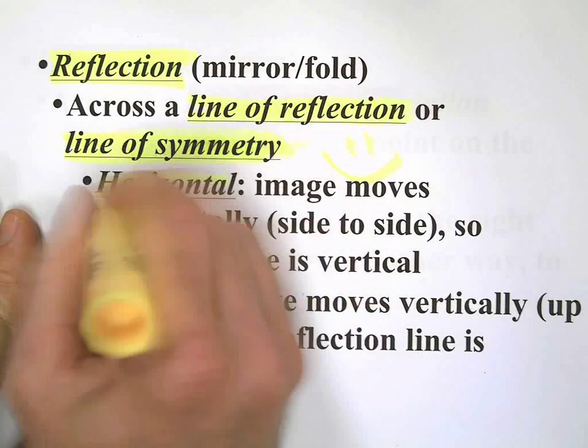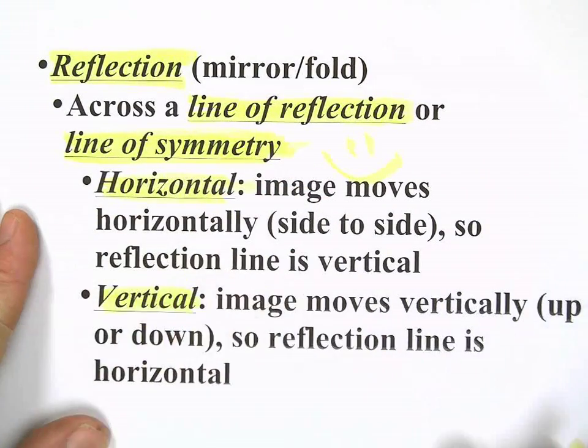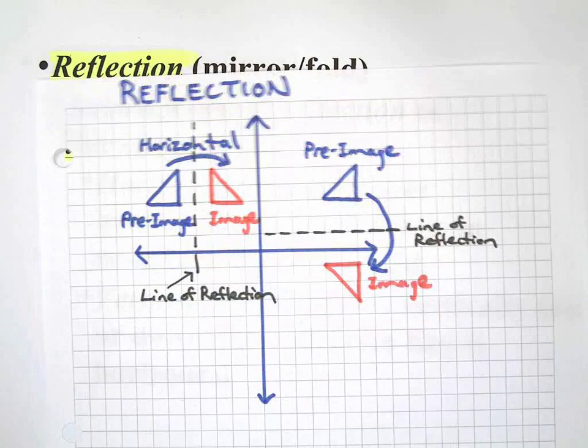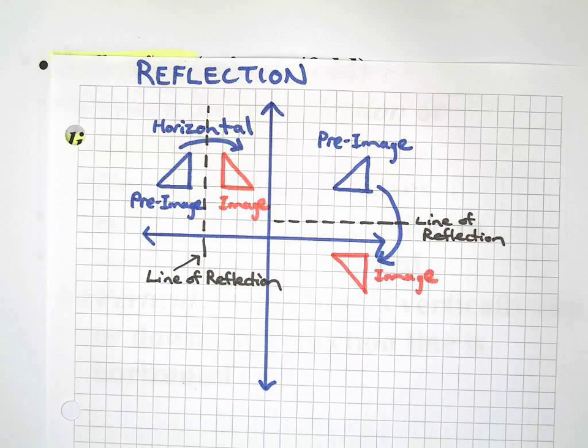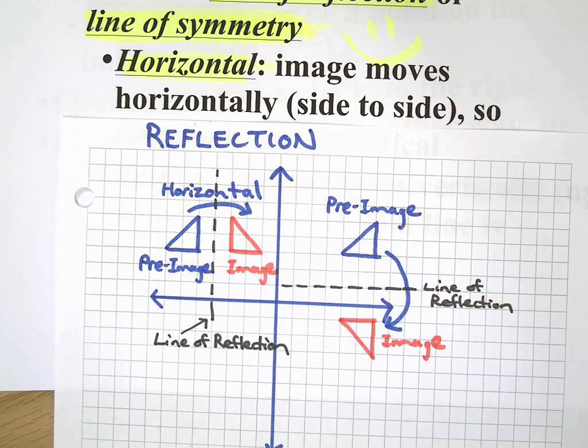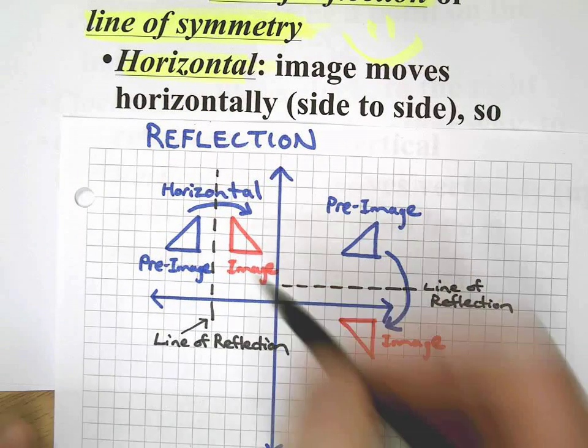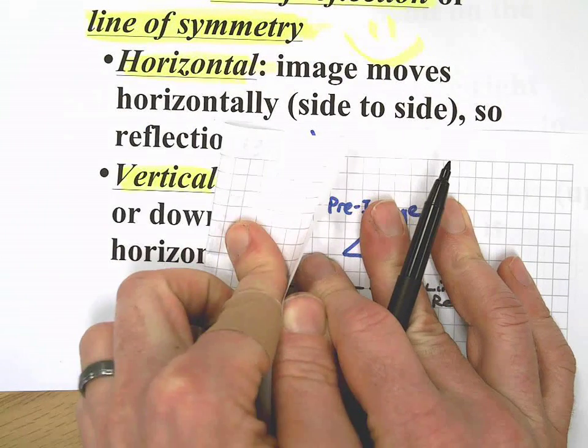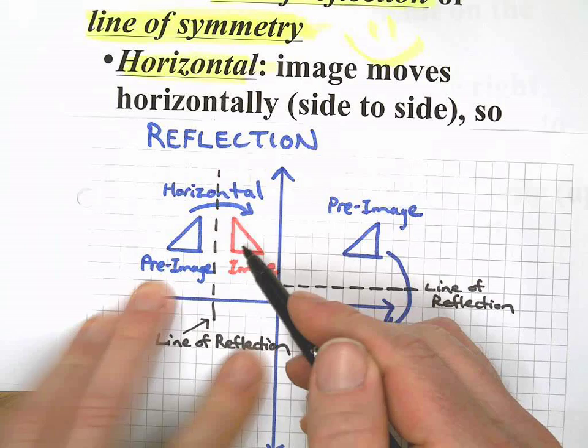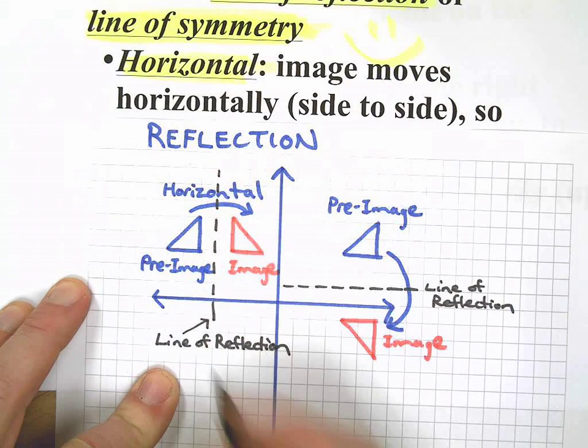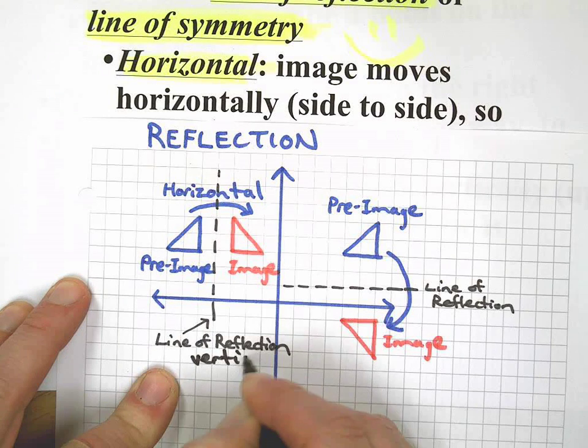We can either have horizontal or vertical. Now, this can be kind of tricky. Let's go to our example here. A horizontal reflection means that the image actually moves side to side. The image moves side to side. So because of that, as you can see here, this image got reflected or folded over, right, and stamped onto this other side. So the line of symmetry, the line of reflection, is actually vertical.